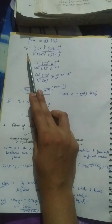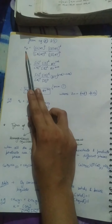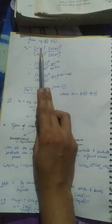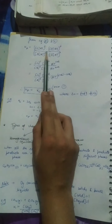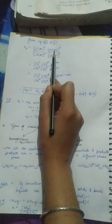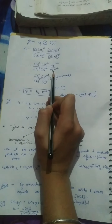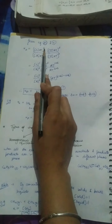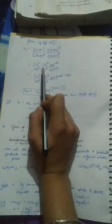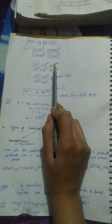Substituting into the Kp expression, we get concentrations of C, D, A, and B each multiplied by RT. Separating the concentration terms from the RT terms, the numerator gives RT to the power (c plus d) and the denominator gives RT to the power (a plus b). Since the base RT is the same, we subtract the powers: RT raised to (c plus d minus a plus b).